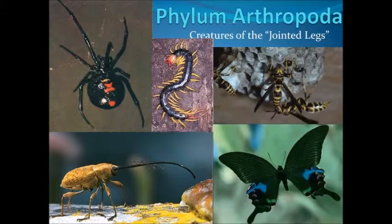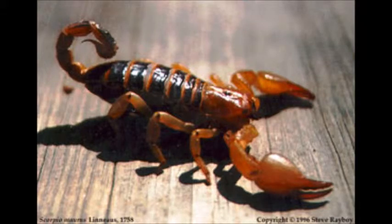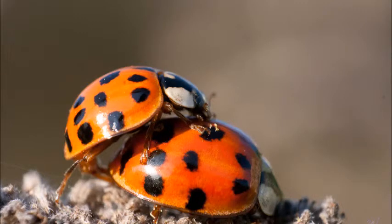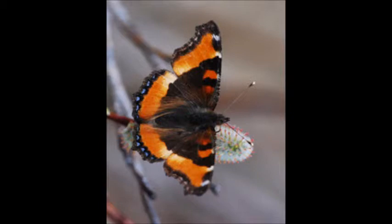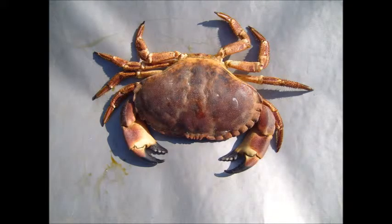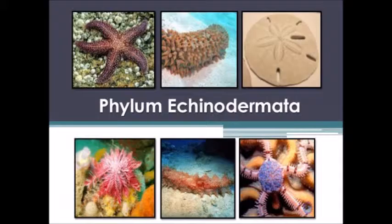Next we have Arthropoda. This phylum consists of insects and spiders. Arthropods have bilateral symmetry. These organisms also contain tissues. Their digestive systems form, but the anus comes in first.